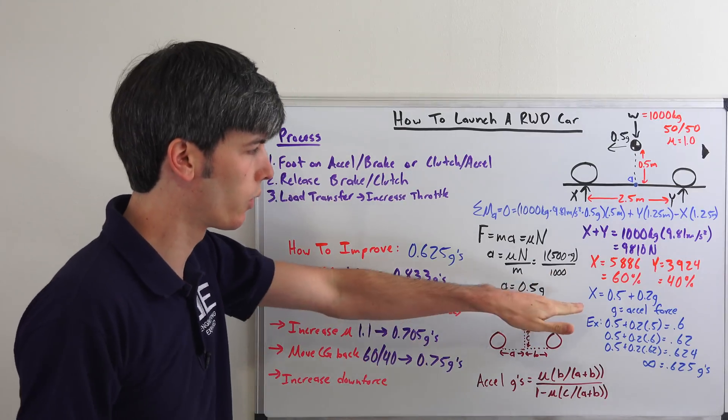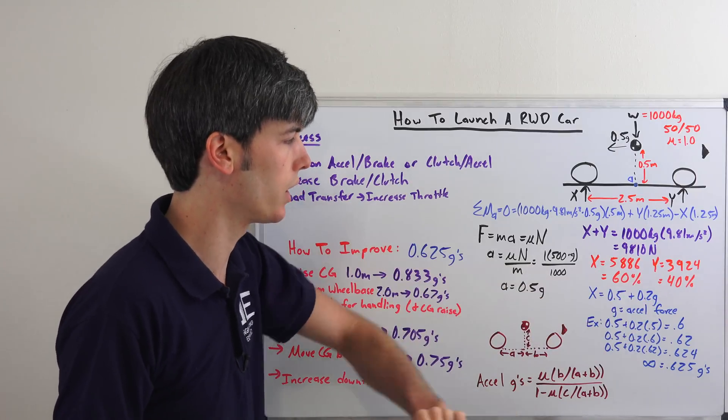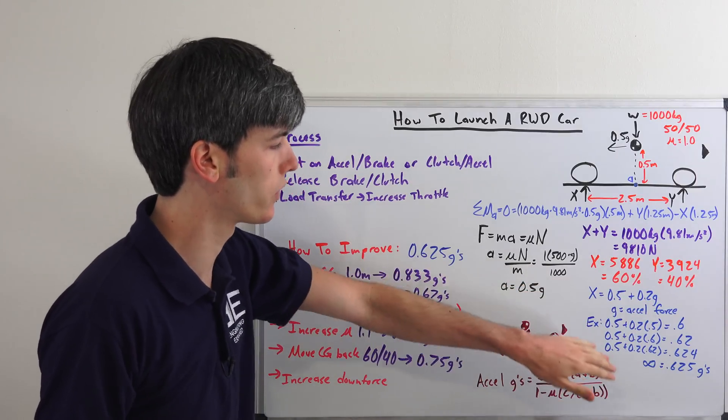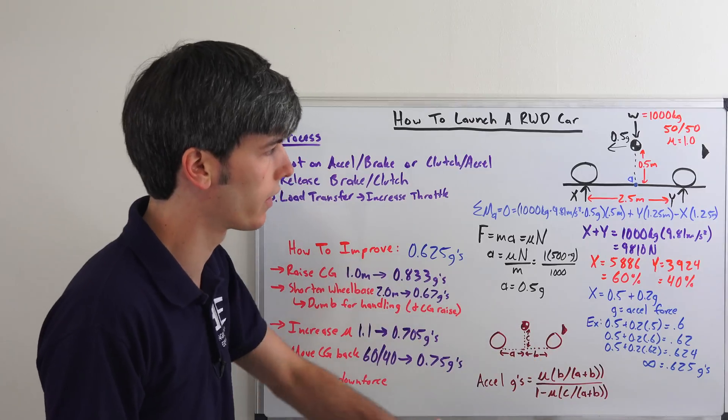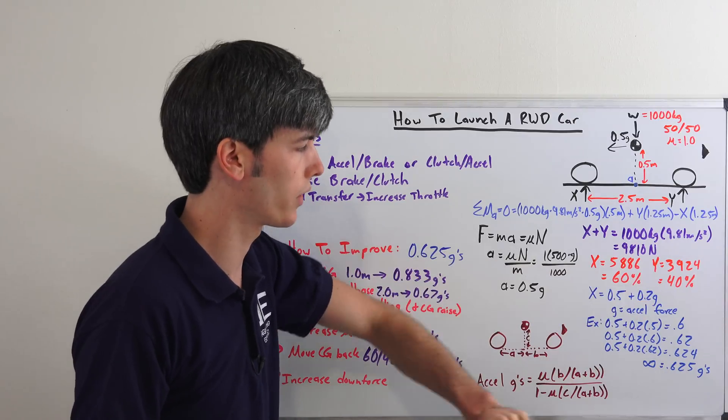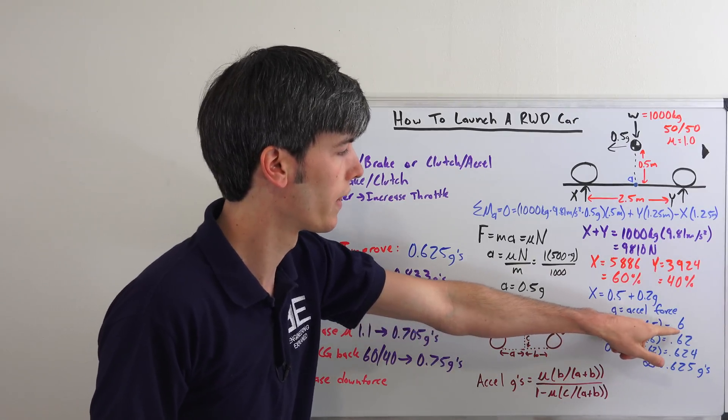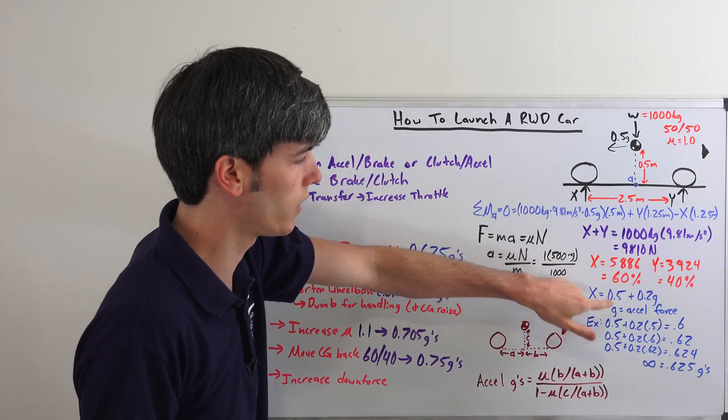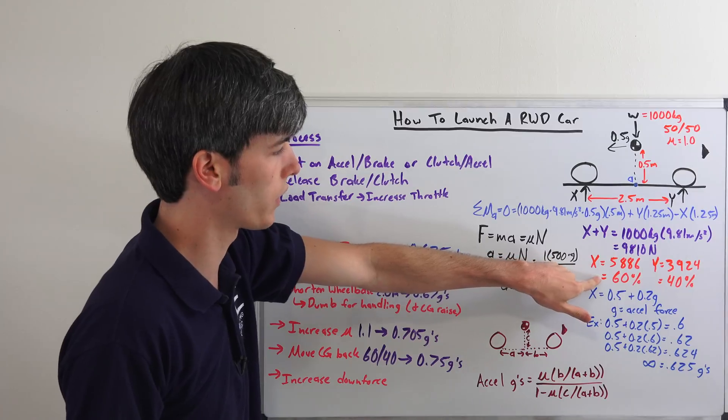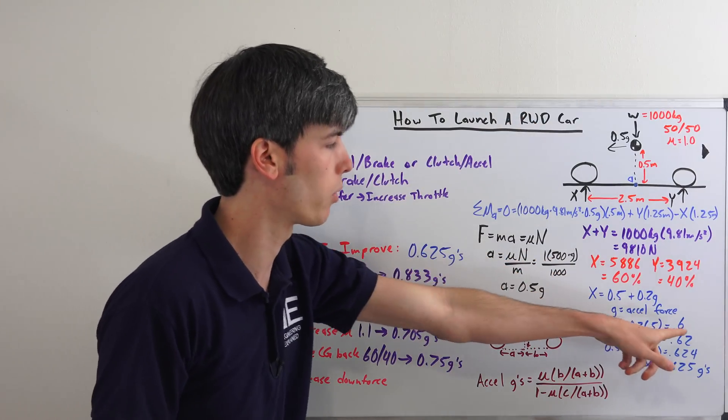Okay, so I've simplified this into a very basic equation here. x equals 0.5 plus 0.2 g. And this is kind of going to be our infinite sum to find out where this all ends up at. So initially we can accelerate at half a g plus whatever load transfer we have. And so we're going to have 0.5 here plus 0.2 times 0.5. That gives us 0.6. As you can see, this equation works as we've figured out here. So 60% load transfer and that means we can accelerate at 0.6 g's.